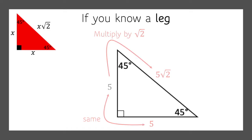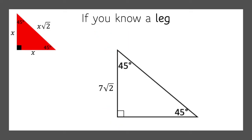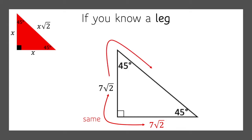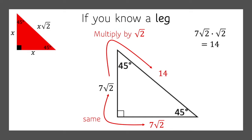Let's try another one. This time our leg is 7 times the square root of 2. So we automatically know that the other leg is also 7 times the square root of 2. If we want to know the hypotenuse, we just take one of the legs and multiply it by the square root of 2. So 7√2 times √2 gives us 14. So we know the hypotenuse is 14.